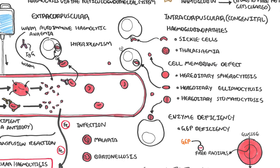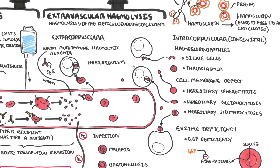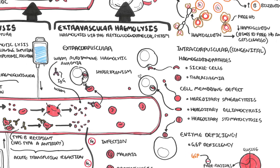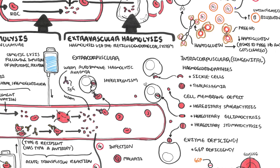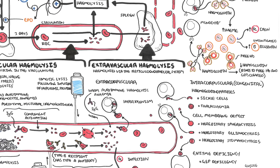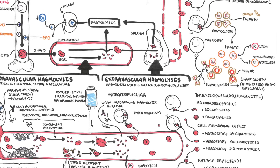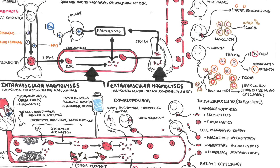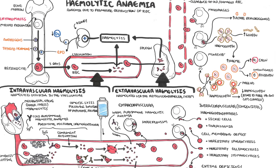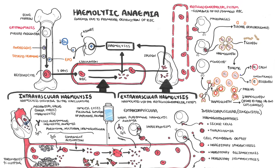In summary, hemolytic anemia can be divided into intravascular and extravascular hemolysis. Extravascular hemolysis can be further divided into extracorpuscular and intracorpuscular causes.